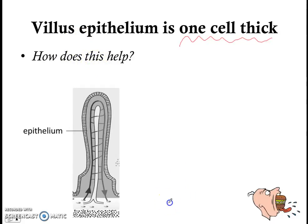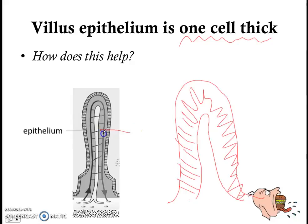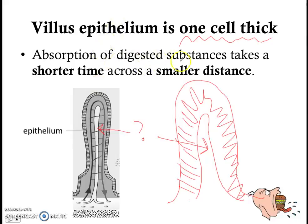How does a one-cell-thick epithelium help increase the rate of absorption? Imagine if the epithelium of the villus was very, very thick. Would nutrients be absorbed faster through a one-cell-thick layer or through a many-cell-thick layer? Clearly, if the epithelium is one cell thick, absorption can happen a lot faster. Absorption of digested substances takes a shorter time across a smaller distance, and a one-cell-thick distance takes very little time for digested substances to cross.